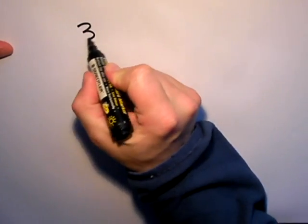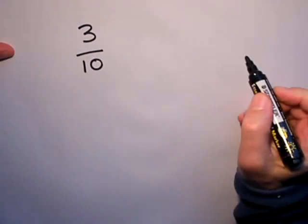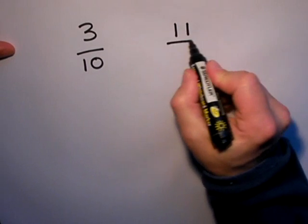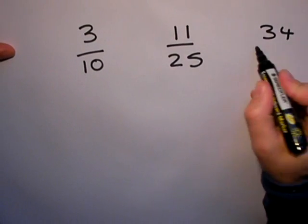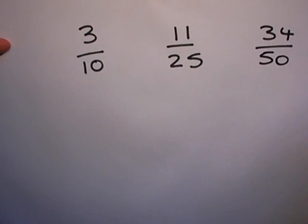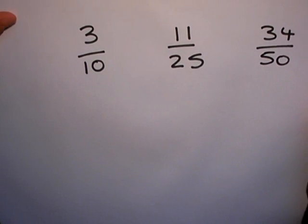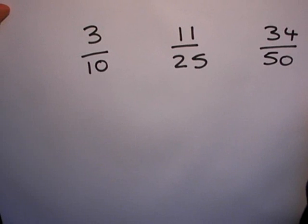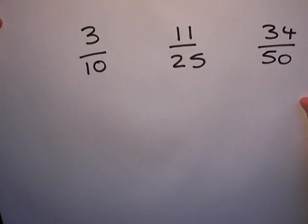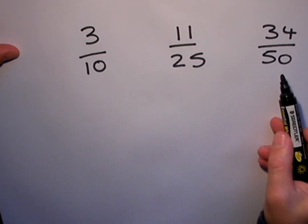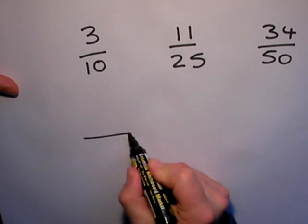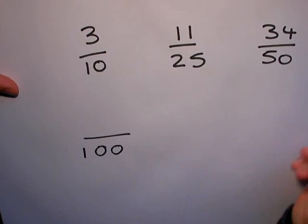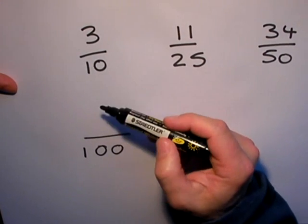Such as 3/10, 11/25, and 34/50. I want to change those all into percentages. Now the reason we can do these without a calculator is because each of these numbers on the bottom here can be turned into one hundredths quite easily. So in the first example, I can turn 3/10 into something out of 100 by multiplying by 10.